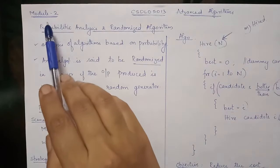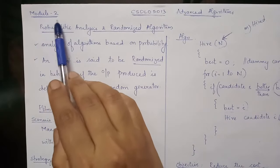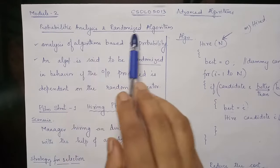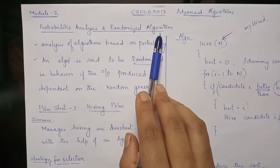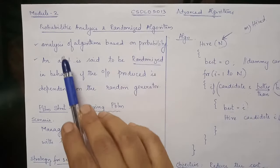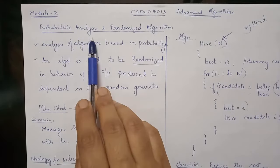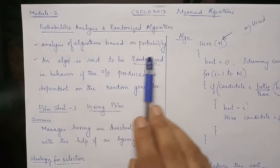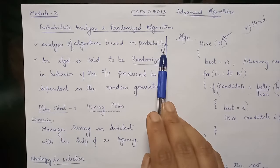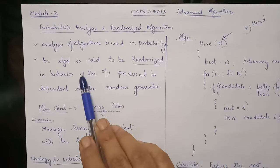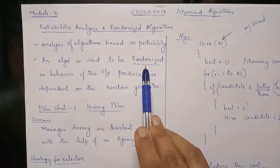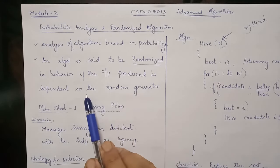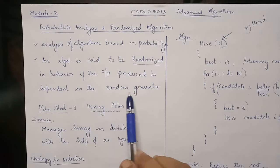Good morning students, let's start with Module 2: Probabilistic Analysis and Randomized Algorithms. Probabilistic analysis deals with analyzing algorithms based on probability. An algorithm is said to be randomized in behavior if the output produced is dependent on the random generator.